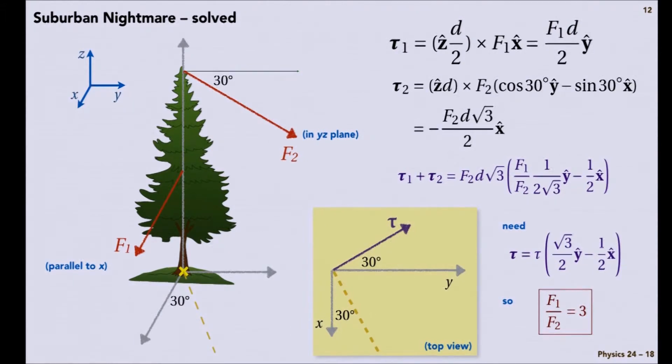Yeah. Imagine that f1 were actually applied down at the base of the tree. OK? Then it's not going to tend to make it rotate at all about the base of the tree. So the effectiveness of f1 compared to f2 is compromised by the fact that it's not applied equally far away.